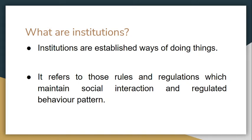We will interact with people through social interaction. Our behavioural patterns should be regulated, otherwise there will be chaos and confusion. For example, police is an institution. If there is no court of law, then there will be many people who are not following a particular law.